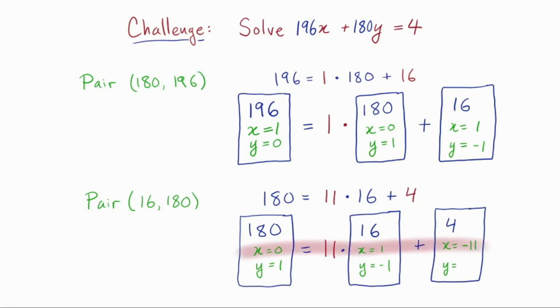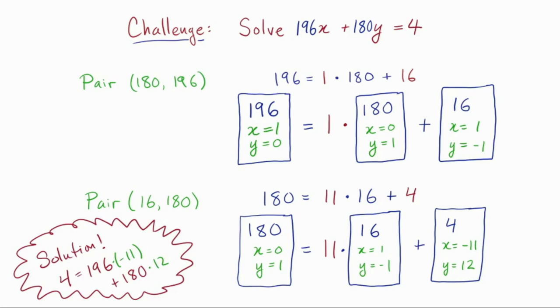So we look at the x's and we see that x equals negative 11 is what's needed on the last card to make the true equation. 0 is 11 times 1 minus 11. And finally, y has to be 12. Okay, so we now have a recipe card for 4. But 4 is what we were after all along. The original question was how to make 4 as a recipe in terms of 196 and 180. So we're done. The solution is x equals negative 11 and y equals 12.